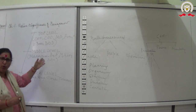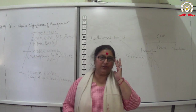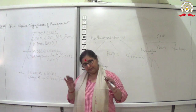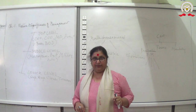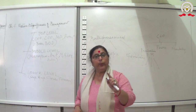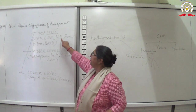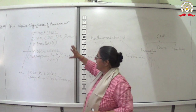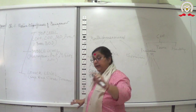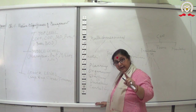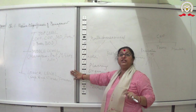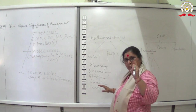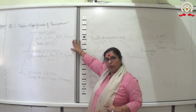These designations matter for board questions. For example: 'Your grandfather retires as a managing director — at which level was he working?' Answer: top level. Now, all five functions of management are performed at every level, but the nature of the work differs at each level.